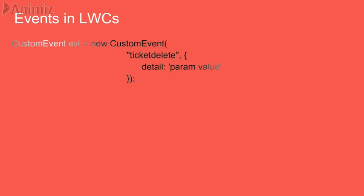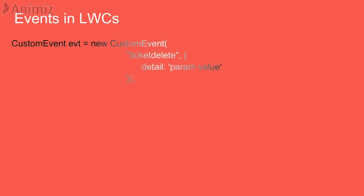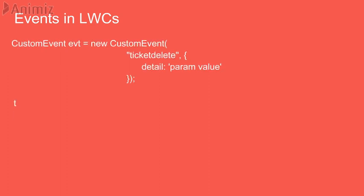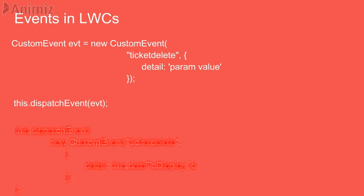An event is declared using a custom event object in the JavaScript file of your web component like this. "TicketDelete" is the name of the registered event — make sure that there is no upper case letter in the event name. "Detail" is the parameter name which is received by the event listener. This event is now ready to be dispatched or triggered using the dispatchEvent method. Let's combine the event registration and event fire syntax in a single line of code. Pretty simple, right?